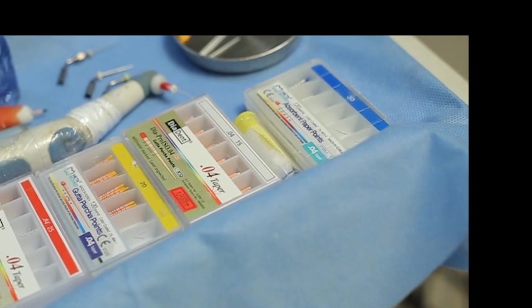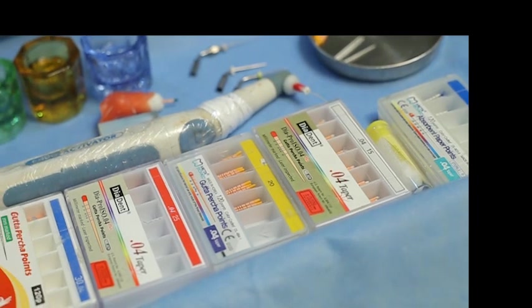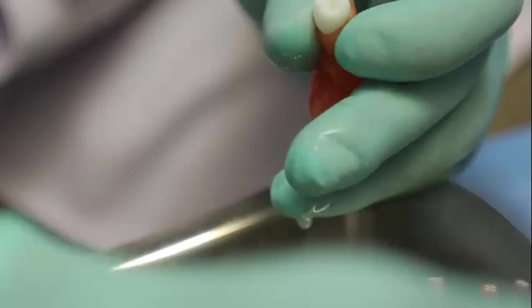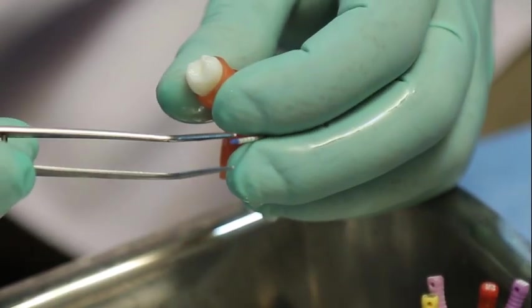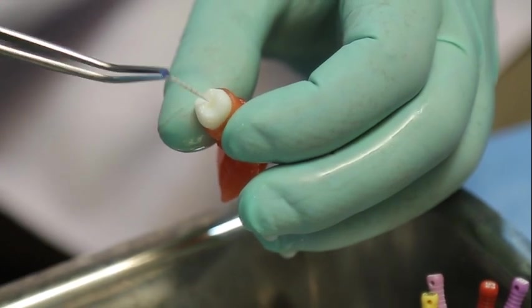Then next is drying of the canal. You can use absorbent paper points for this purpose. Here I am using 4% taper size 30 or you can use 35 also, absorbent paper points.